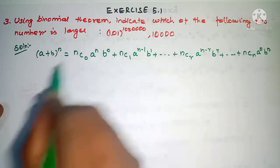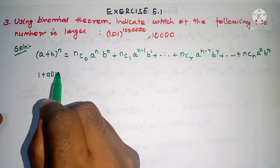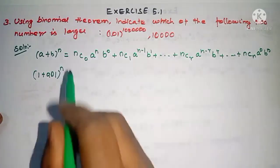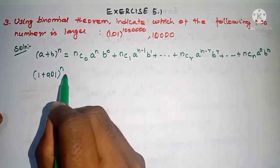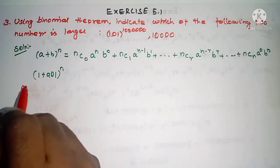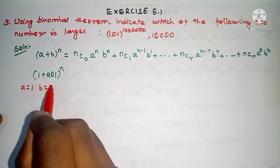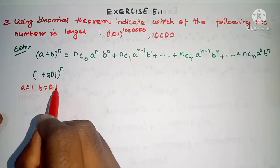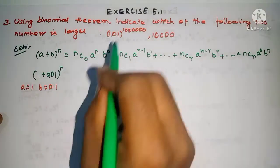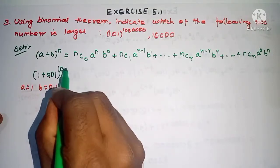Here we have 1.01, which we split up. So a = 1, b = 0.01, and n = 10 lakhs.